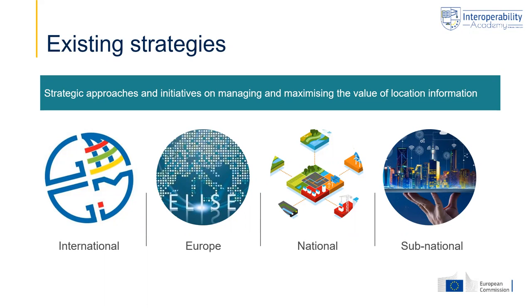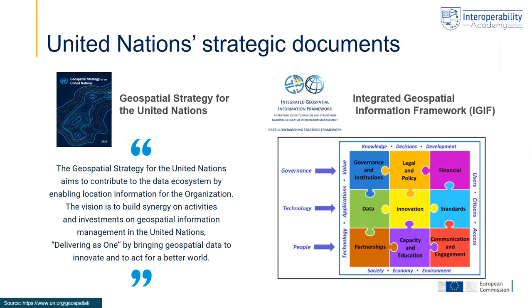In this chapter, we will look at examples of existing strategies at four levels. We start with the international level, then look at the European level, national level, and finally sub-national level, to show how strategies for realizing location enablement exist and are being implemented at each of these levels. Let us start with the international level by having a look at what the United Nations are currently doing with regard to location enablement.